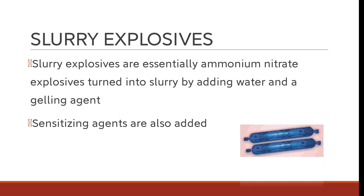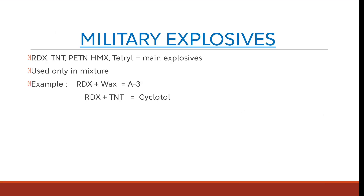Slurry explosives are essentially ammonium nitrate explosives turned into slurry by adding water and a gelling agent. Sensitizing agents are also added to make them sensitive. Military explosives — RDX, TNT, PETN, HMX, and tetryl — are the main military explosive compounds. They are used only in mixture form; for example, cyclotol is a military explosive composed of RDX plus TNT.